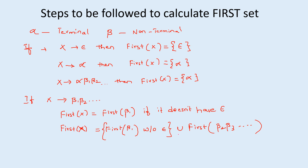You have to repeat the same process until you get the first of the last non-terminal without epsilon. To summarize: if x → ε, first of x is epsilon; if x → terminal, first of x is that terminal; if x → terminal followed by any non-terminals, first of x is the terminal. If x → a set of non-terminals, first of x is first(β1) if it doesn't have epsilon; if it does, take first(β1) without epsilon union first of the remaining non-terminals, and repeat the same step.